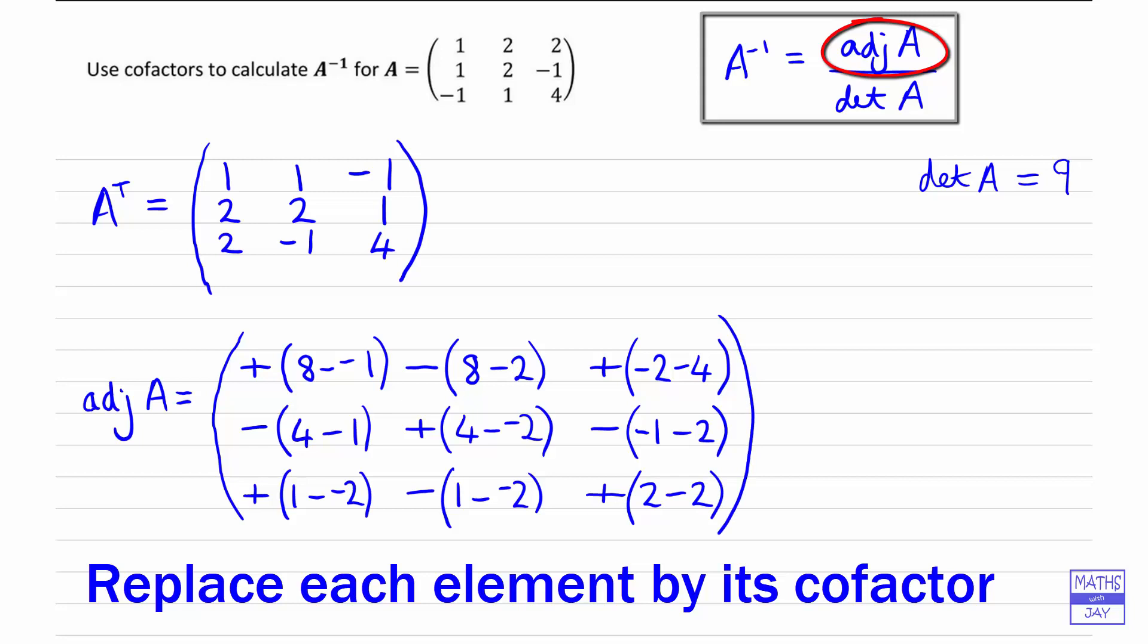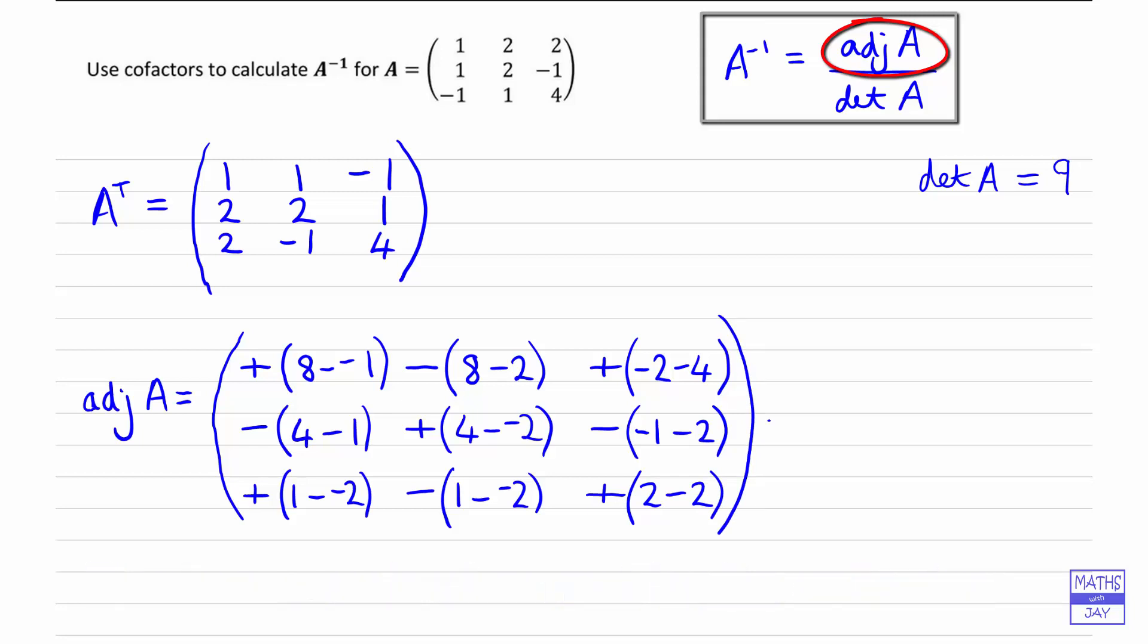So now it's just a matter of working out what those values are. So we have got 8 plus 1. And then we've got negative 8 minus 2, so that's negative 6. And another negative 6. And then negative 3, 4 plus 2 is 6. And then we have got negative, negative 3, so plus 3.